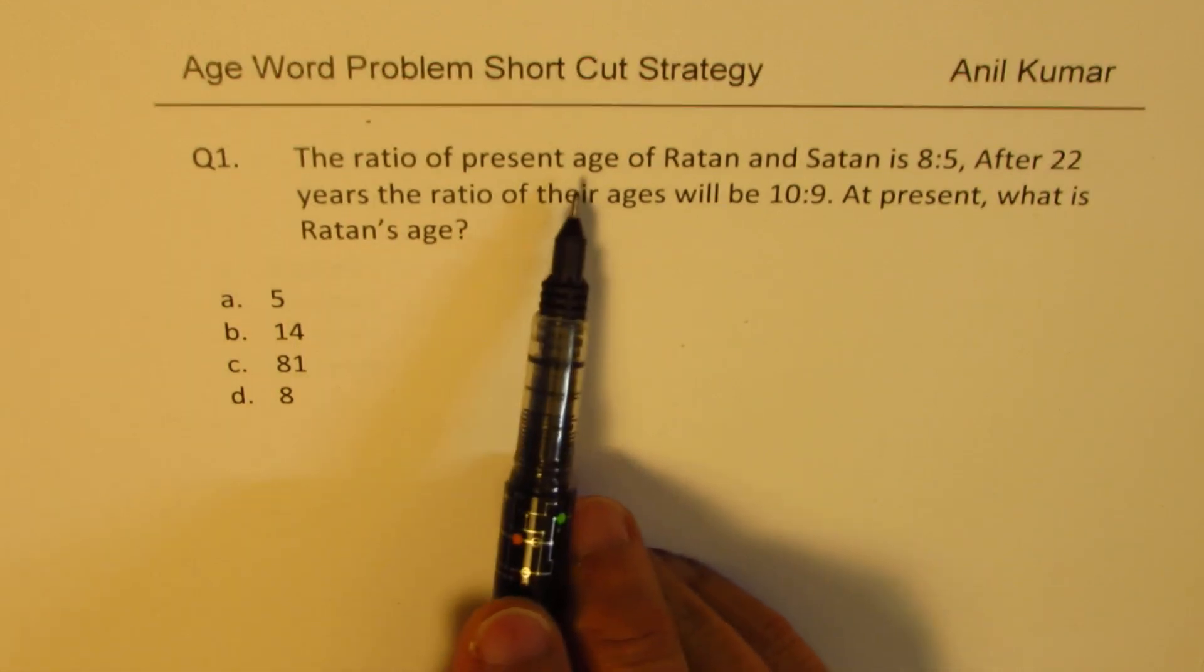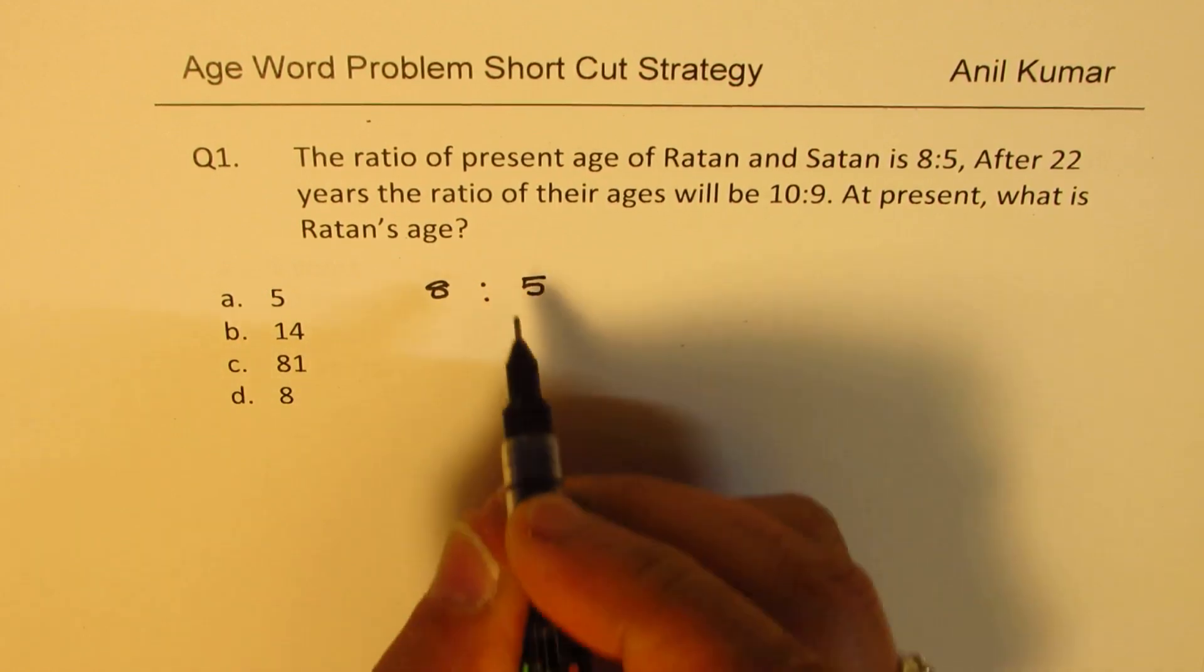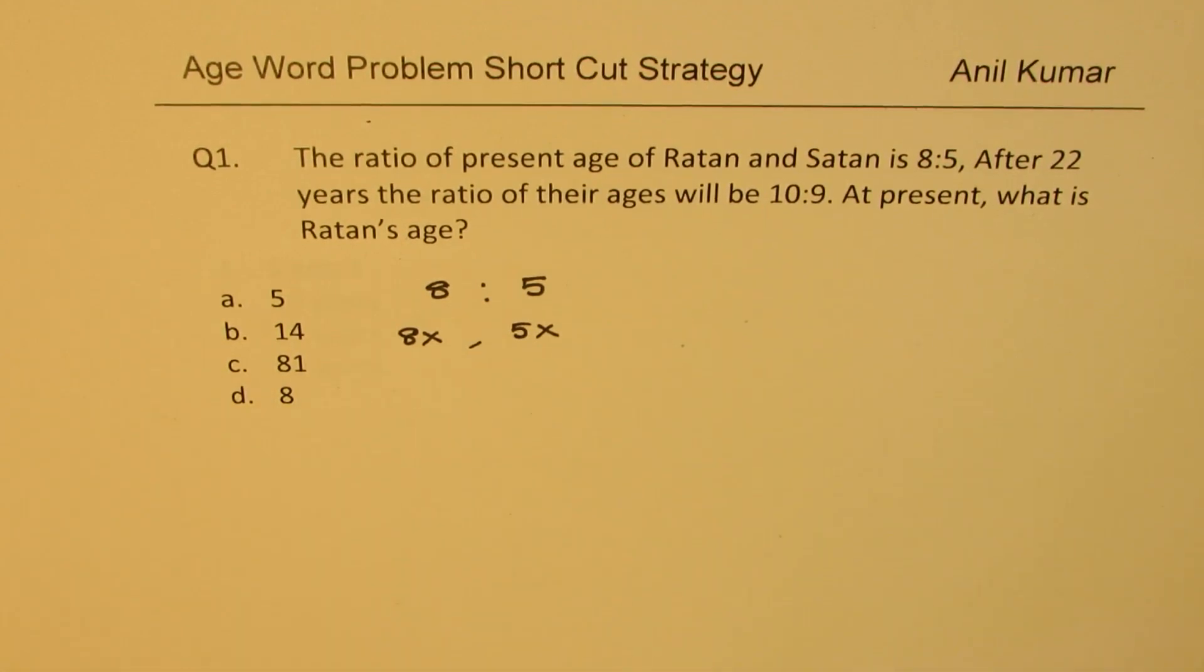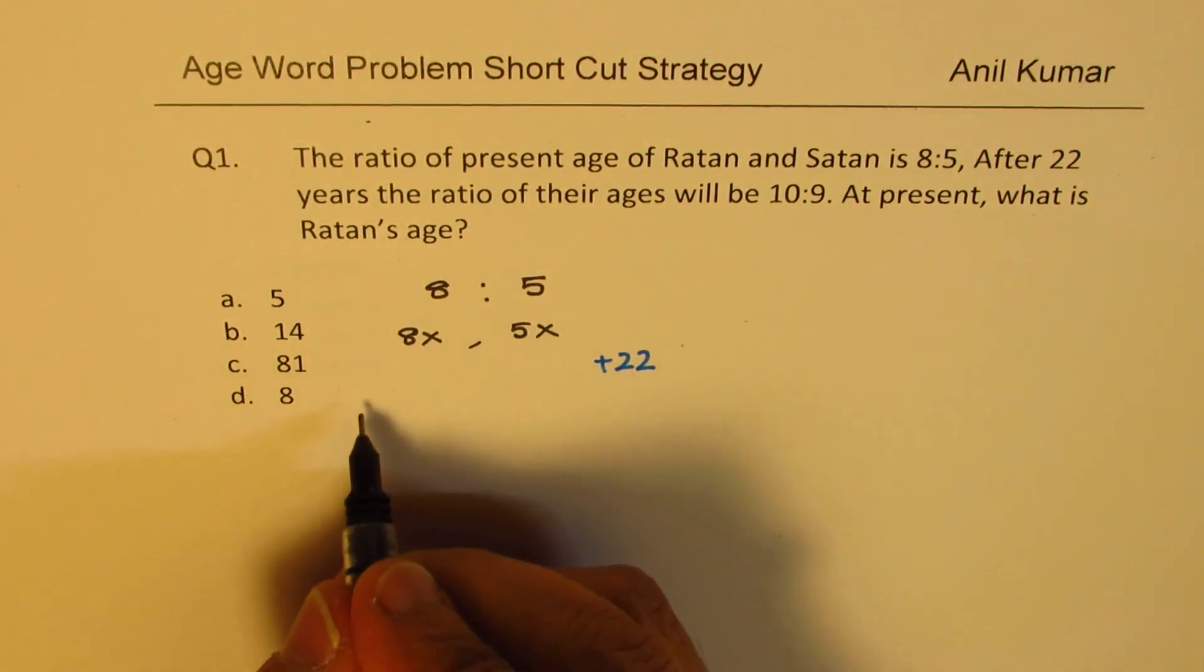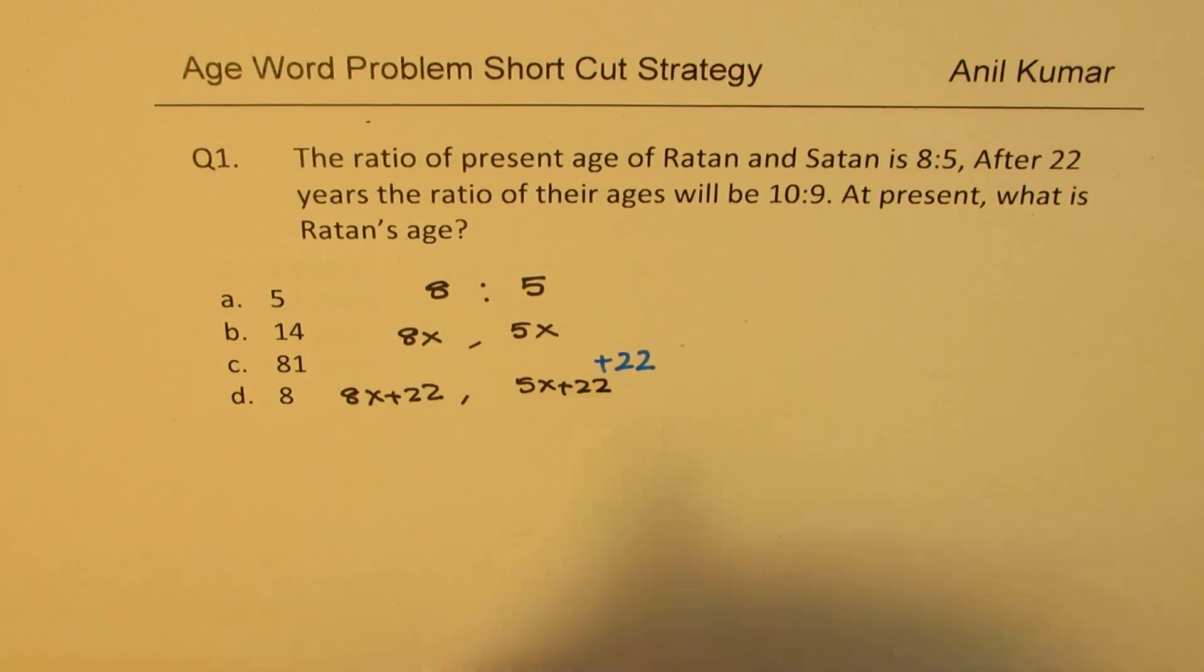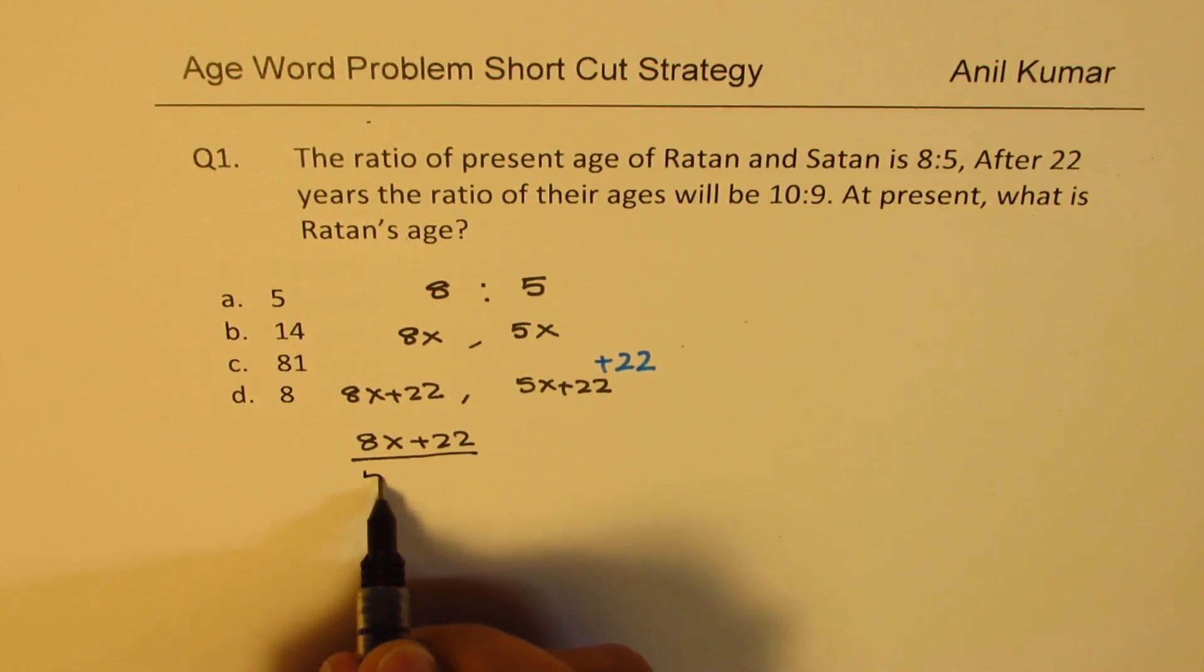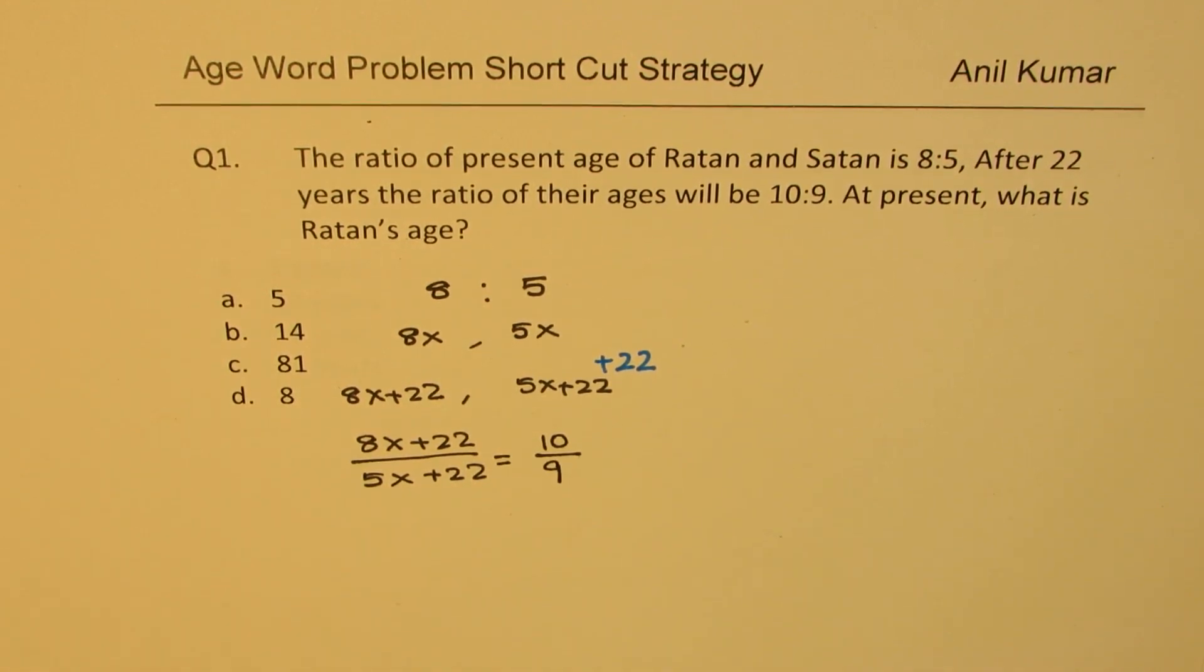Question number one: the ratio of present age of Ratan and Satan is 8 is to 5. So when you are given ratio 8 is to 5, you can say it is 8x and 5x. That is how we say present age. After 22 years, we have to add 22 to each one of them. So after 22 years, this will be 8x plus 22 years, and that will be 5x plus 22 years. So it says after 22 years, ratio of their ages is 10 is to 9. So this ratio, that is to say, 8x plus 22 divided by 5x plus 22 is equal to 10 over 9. That is the equation to solve.